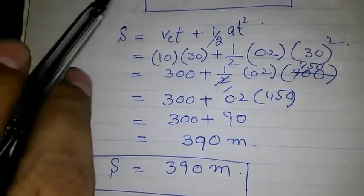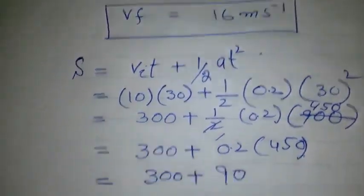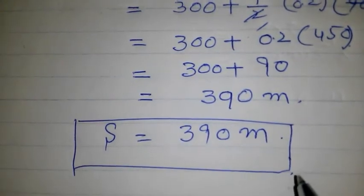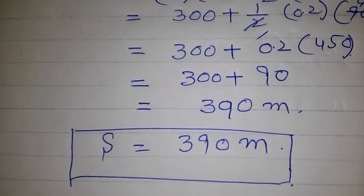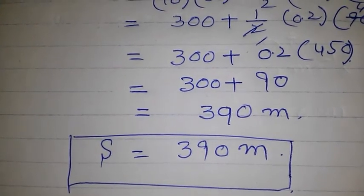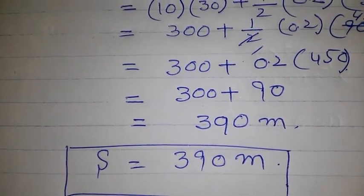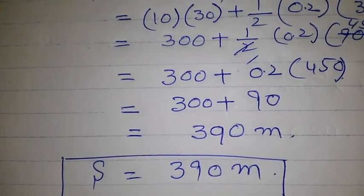We have found these two: Vf is equal to 16 meter per second and S is equal to 390 meter. Thank you for watching, please subscribe my channel and share with friends. If you have any comment please write in the comment box. Thank you.